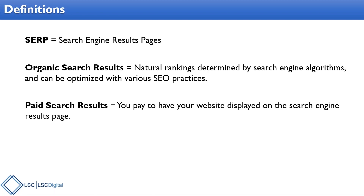Next are the paid search results. Those you do pay for. You're willing to pay $0.50 or $20 per click to rank for a term. And that varies greatly depending on how competitive the terms are.